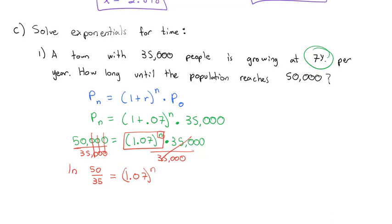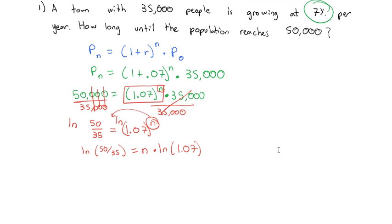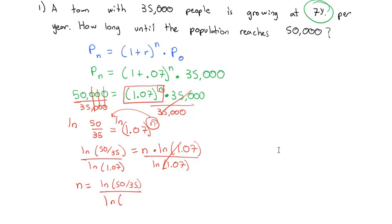Now that the exponential is alone, we take the natural log of both sides, grabbing the exponent and moving it out front: ln(50/35) = n · ln(1.07). Dividing both sides by ln(1.07) tells us the number of years is ln(50/35) / ln(1.07). Being careful with parentheses in the calculator, we get approximately 5.27 years.